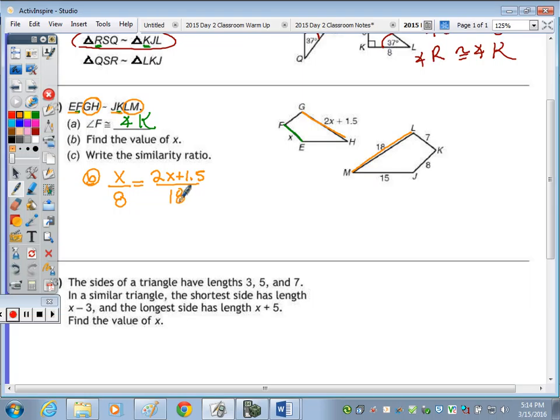In solving that proportion by cross-multiplying, we have the cross-product 18X is equal to 16X plus 12, subtracting the 16X. We have 2X equals 12, and X is equal to 6.